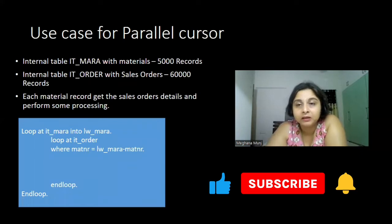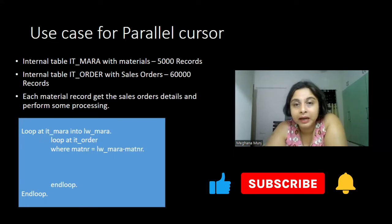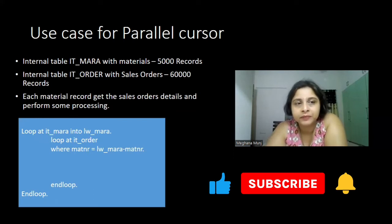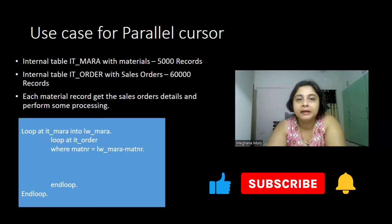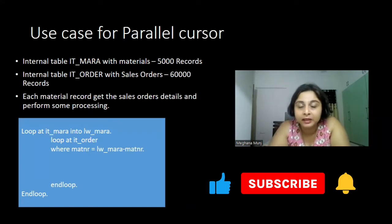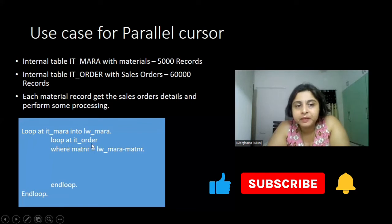The use case for parallel cursor: we have considered two internal tables, ITMARA and ITORDER. ITMARA has materials — assume there are around 5,000 records. Your ABAP code is expected to process each material record and find out the sales order details for that material and do some further processing. So we have two loop statements, one at ITMARA and one at ITORDER, with a WHERE clause wherein processing will only happen for those materials which match ITMARA.